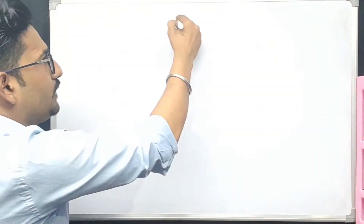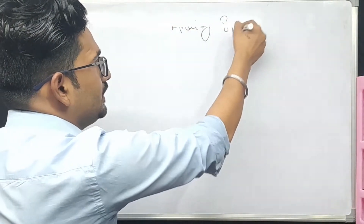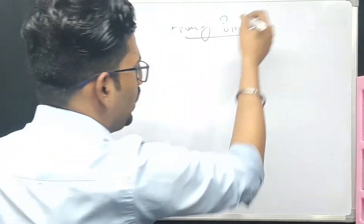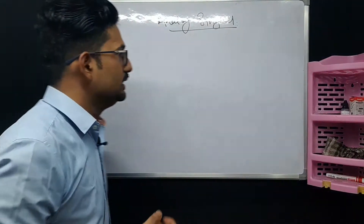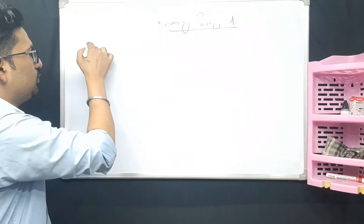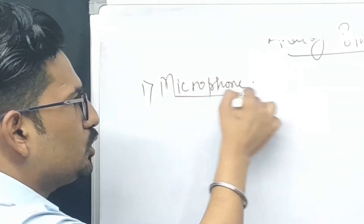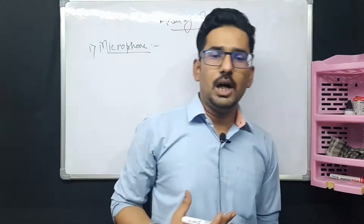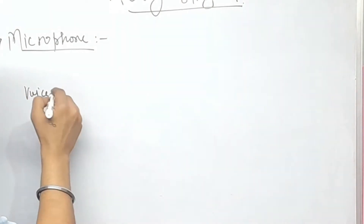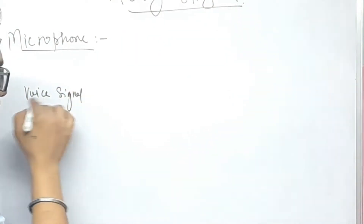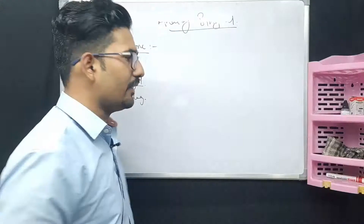I will take some basic examples to explain what is the actual meaning of analog signal. If I am talking about a microphone, our voice signal — the voice signal is in the terms of analog. So our voice signal is an analog signal.